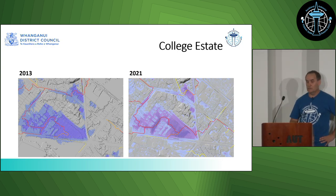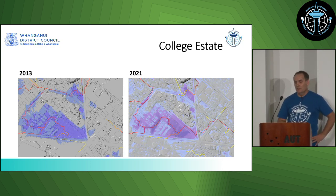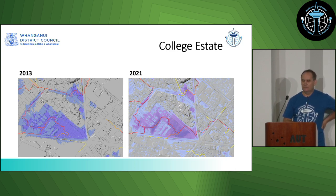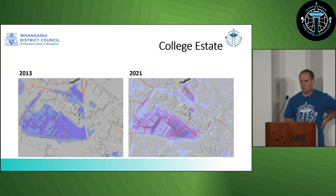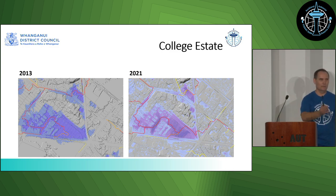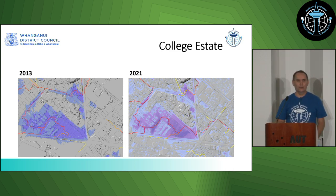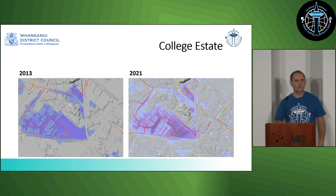College Estate is another relatively new subdivision with a big flow path coming straight through the middle of it. Again, we had much more accurate results as to where flow paths were really going and where the depths were in those depression areas.